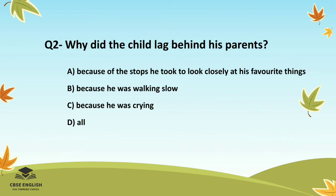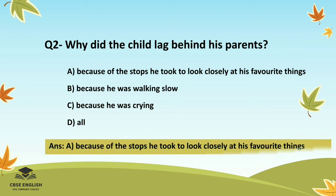Question number two: Why did the child lag behind his parents? Options are: because of the stops he took to look closely at his favorite things; because he was walking slow; because he was crying; or all. The correct answer is because of the stops he took to look closely at his favorite things.